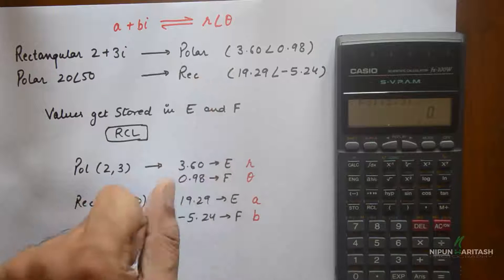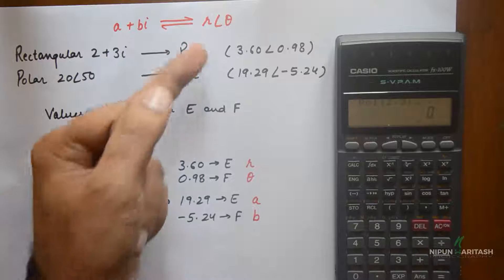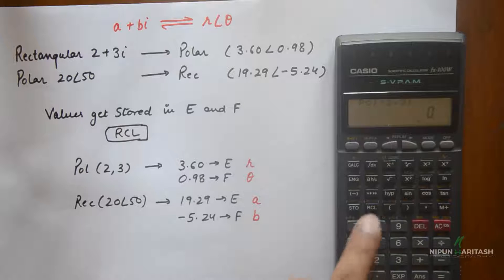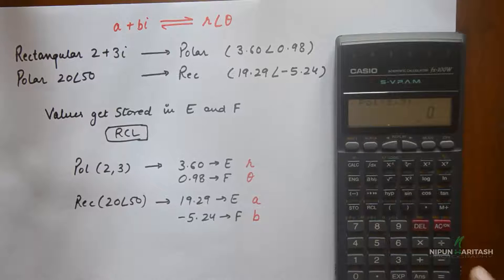The values for polar are in the form of R angle theta. So R and theta are going to be stored in the variables E and F, and you can see them using the button RCL.